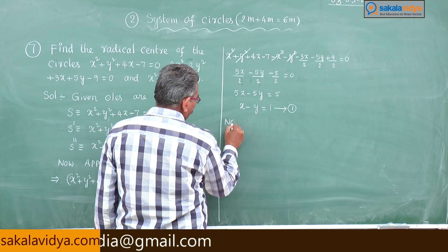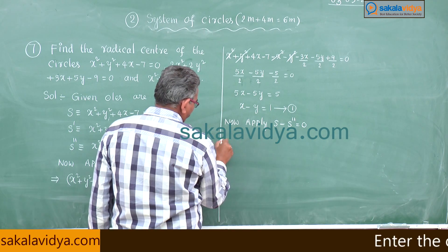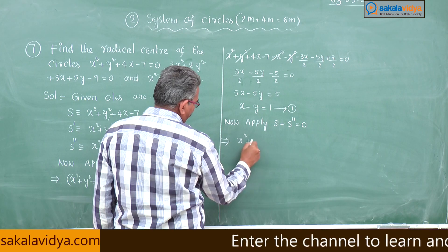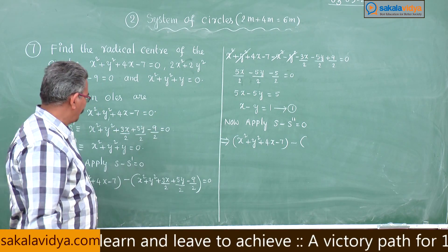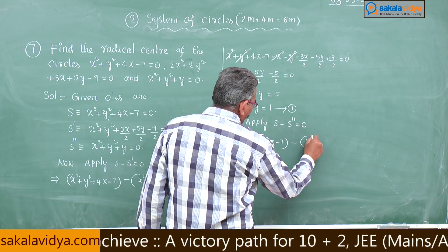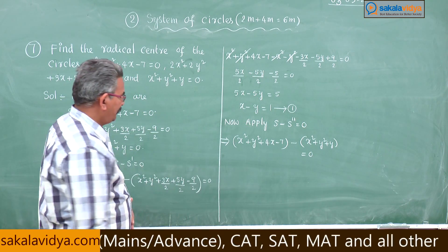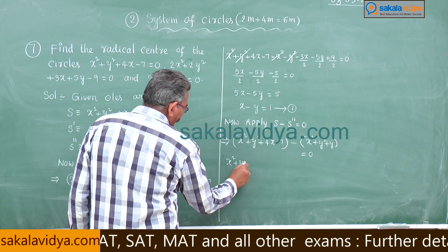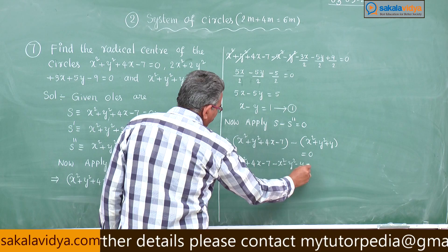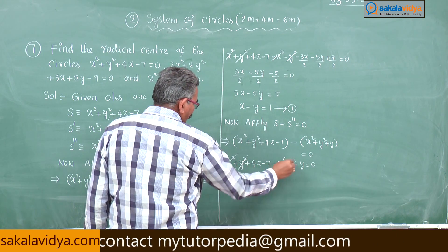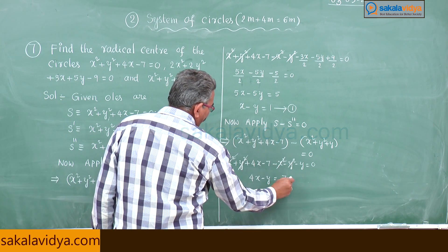Now apply S minus S'' equals 0. This is x² + y² + 4x − 7 minus (x² + y² + y) = 0. Simplifying: x² and y² cancel, giving 4x − y = 7. This is Equation 2.